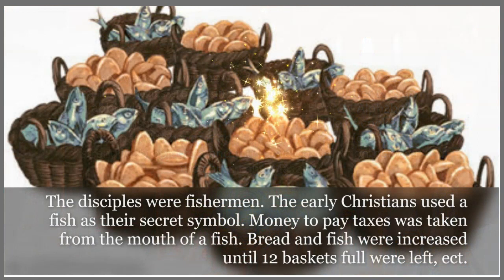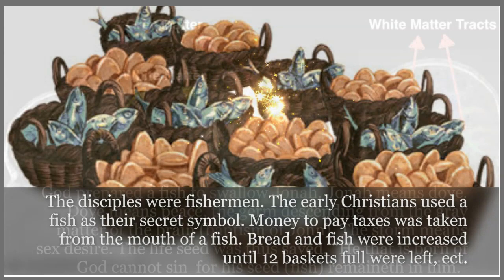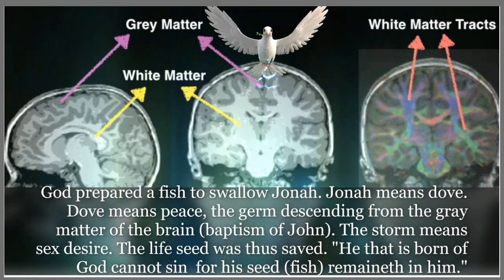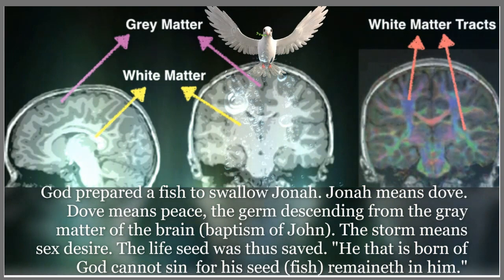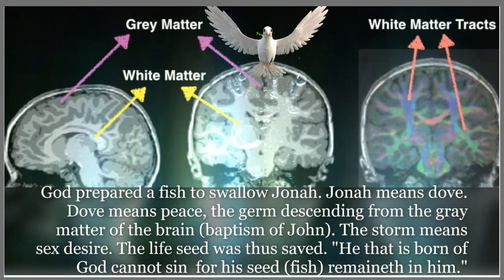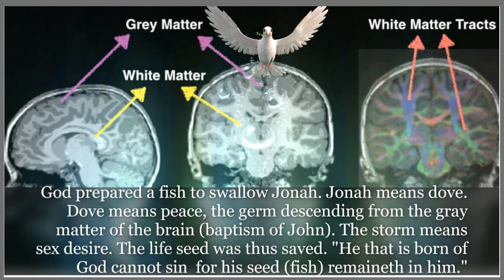The disciples were fishermen. The early Christians used the fish as their secret symbol, and money to pay taxes was taken from the mouth of a fish. Bread and fish were increased until twelve baskets were full and left, etc. God prepared a fish to swallow Jonah, and Jonah means dove. Dove means peace — the germ descending from the gray matter of the brain, i.e., baptism of Jesus by John. The storm means sex desire. The life seed was thus saved. "He that is born of God cannot sin, for his seed, fish, remaineth in him."